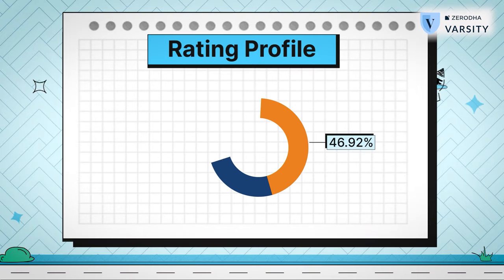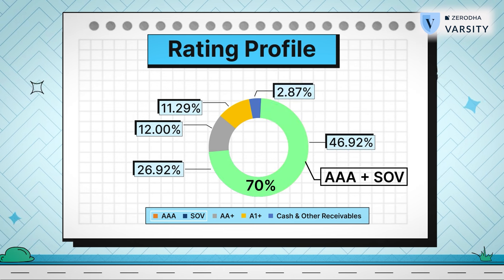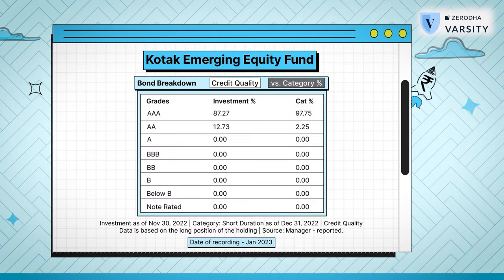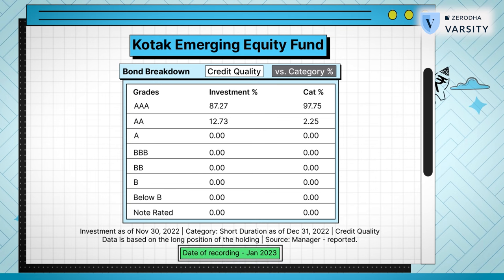Here is the rating profile of the portfolio: nearly 74% is split between AAA bonds and bonds issued by the government, also called sovereign bonds. While this may look good at first glance, we also need to check how this fund is positioned compared to the rest in the category. To do this, I look at a third-party website like Morningstar to see the bond breakdown — I look at this data point only to get a general idea of risk. Note: I'm recording this video in January 2023 and the table uses data points from November–December 2022, so it's a bit dated. But from this, we can get a glimpse into the fund manager's thought process.